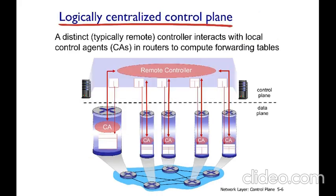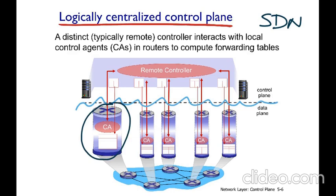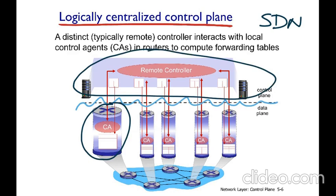In SDN, we can clearly see the difference between both planes. The data plane is implemented in the switches or nodes, and the control plane is implemented on a remote controller. This logically centralized device is in charge of installing the rules on the SDN switches. In this case, both planes are separated.